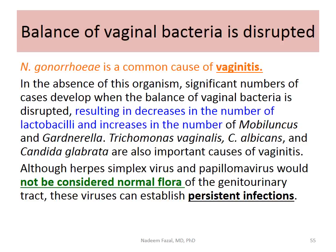Keep in mind that normal flora doesn't mean only bacteria — it also applies to oral mucosa, anal canal, and so forth. However, viruses like herpes simplex virus and human papillomavirus are not considered normal flora of the genitourinary tract. If you find HSV or HPV, that is considered abnormal and may lead to infections, especially chronic vaginitis, which is difficult to treat because the infection keeps recurring due to persistent infection.